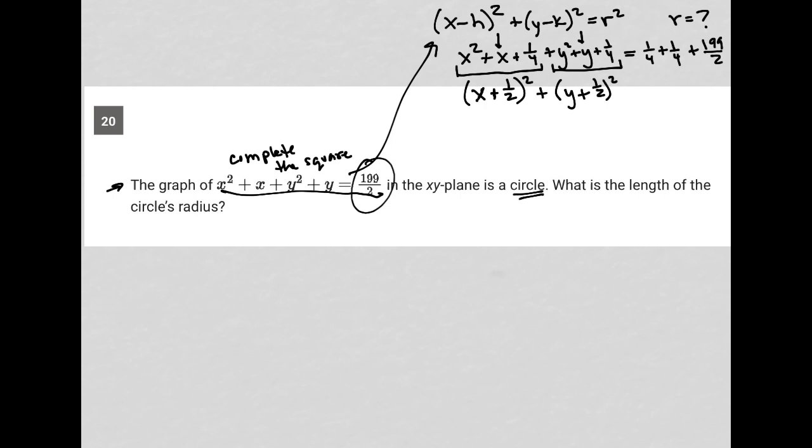I have common denominators for the first two fractions. 1/4 + 1/4 is 2/4, which is 1/2. This becomes 1/2 + 199/2. That can be simplified because they have a common denominator. That becomes 200/2, and 200 divided by 2 is 100. So now that we've seen how I got there, I'm going to erase this and just put 100 here.